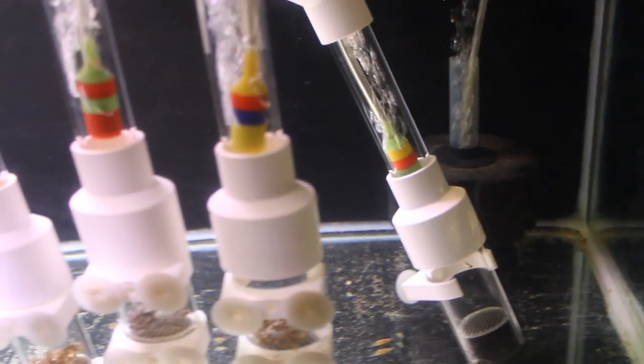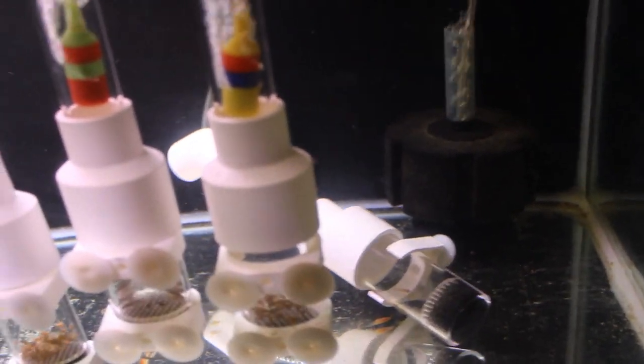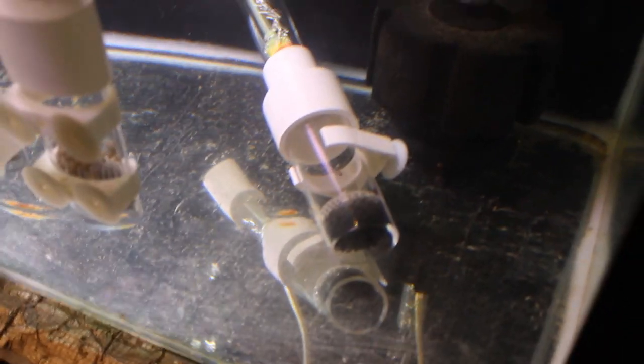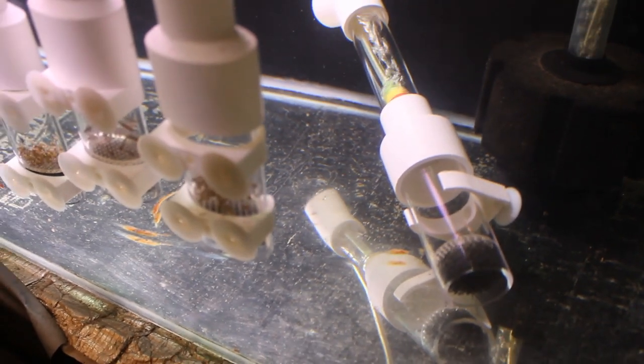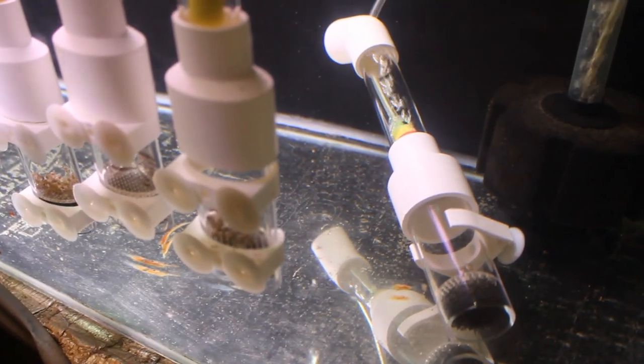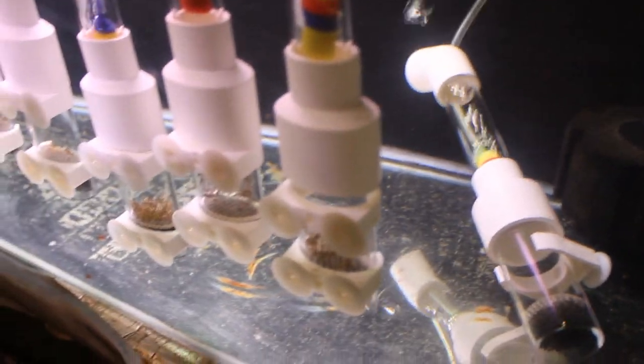And then always leave the tumbler in the tank. Helps keep it, a bit of cycle going. I found if I took my egg tumblers out of the tank and cleaned them, I'd have a higher fry loss rate. So I always keep my egg tumblers up and going.